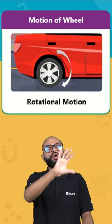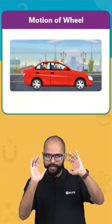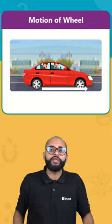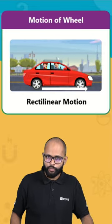Alright, let's zoom out and think of the car as a whole thing. Look at this, the car is moving forward, the center point of the wheel is moving forward, it is moving in a straight line. This is what we call rectilinear motion.